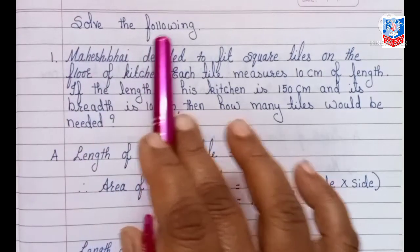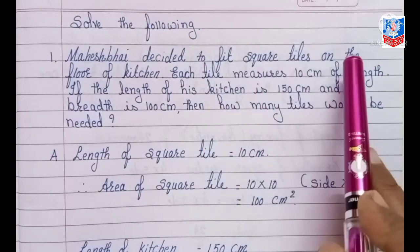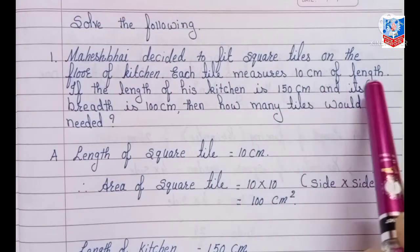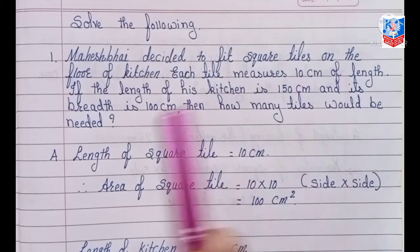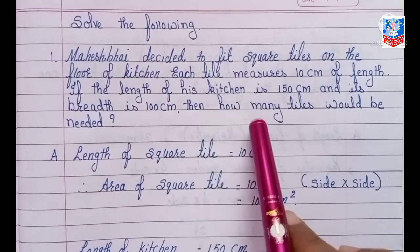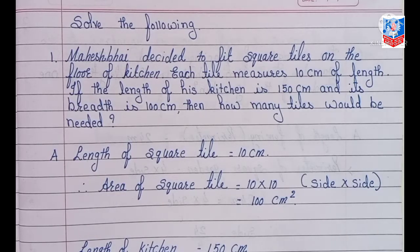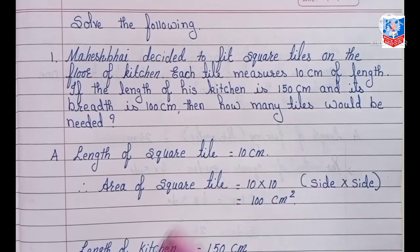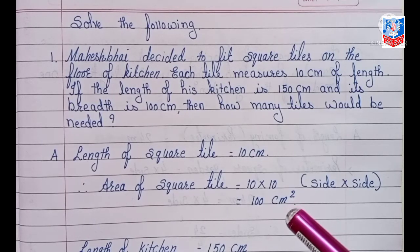Next question: solve the following. First question — Maheshwai decided to fit square tiles on the floor of a kitchen. Each tile measures 10 centimeter in length. The length of his kitchen is 150 centimeter and its breadth is 100 centimeter. Then how many tiles would be needed? We have to find the number of tiles needed. We will first find the area of the square tile, then the area of the kitchen, and from that we will get the number of tiles needed.